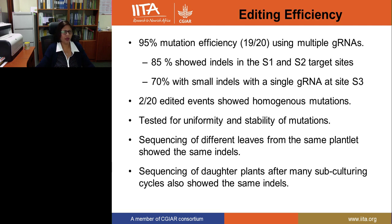In summary, we achieved about 95 percent mutation efficiency using multiple guide RNAs. With all three guide RNAs, we saw mutations in 19 events out of 20 tested. Eighty-five percent showed indels at targets one and two, and 70 percent with small indels at target three. Out of the 20 tested, only two showed homogeneous mutations across all copies. We further tested for uniformity and stable mutations by multiplying two events through tissue culture for several passages, then testing different leaves and different daughter plants. They showed the same indels, confirming the mutations were uniform and stable.